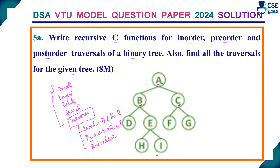In post-order traversal, the root node should be visited last. That is, after visiting the left-side node and the right-side node, the root node is visited. So left-side node should be visited first, then the right-side node, and finally the root node. For example, in a tree with A, B, C — left node B is visited first, then right node C, then root node A. These are the three types of traversals for binary tree and binary search tree.